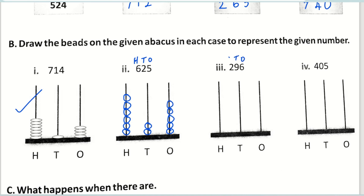The same way — ones, tens, and hundreds. How many hundreds? Two — so draw two beads. How many tens? Nine: one, two, three, four, five, six, seven, eight, nine. And how many ones? Six: one, two, three, four, five, six. The same way — write the place value first. How many hundreds? Four beads. How many tens? Zero — no need to draw beads. How many ones? Five ones — so five beads: one, two, three, four, five.